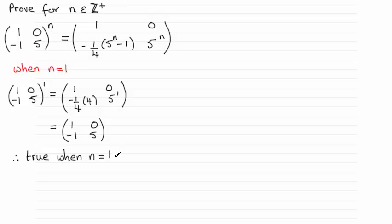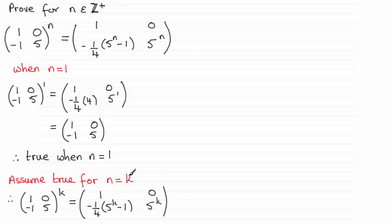The next thing we need to do is assume that this result is true for n equals some constant value, let's say k. So if we do that, just write: assume true for n equals k. Then we just replace the n with the k, both in the left hand side and in the right hand side.